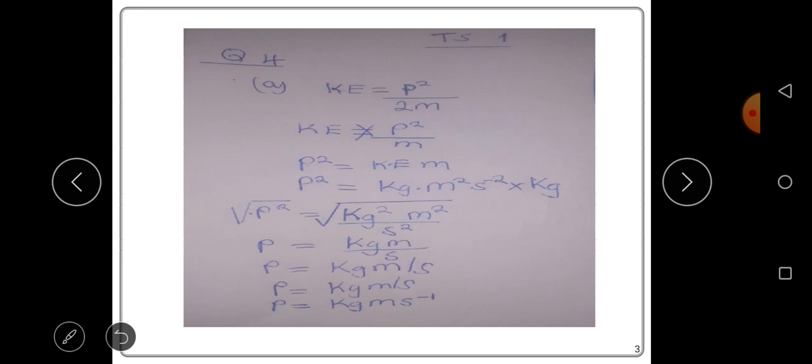So, this can be written like this or can be written like this. So, the units for momentum, it's kg meter per second or kg meter second to the power negative 1. So, these are the correct units for momentum.